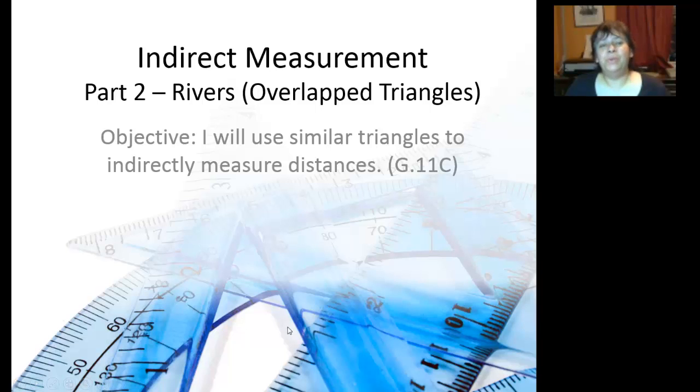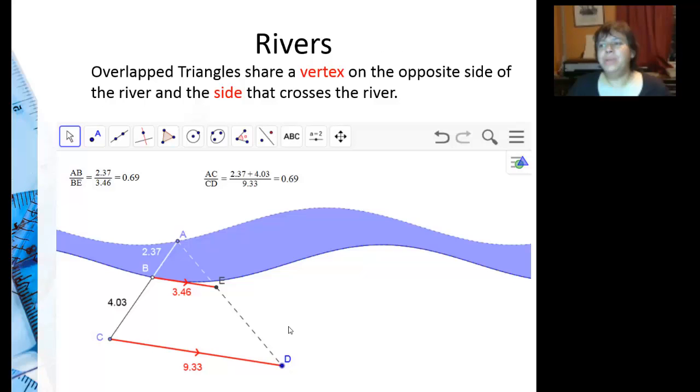For our last application, we are going to measure the distance across rivers without actually crossing the river. So how do we do that? Well, we're going to set up a point across the river that we're going to look at, like a tree or something. That's probably what a surveyor would use, a tree or a pole. Or if they're really trying to be precise, they could actually have a person over there, but then they'd be crossing the river.